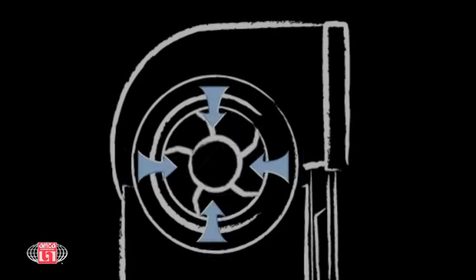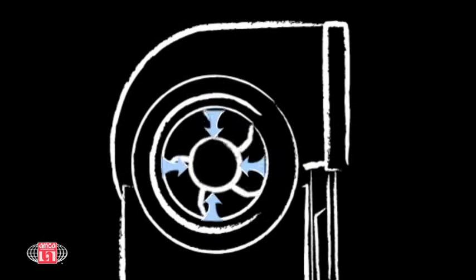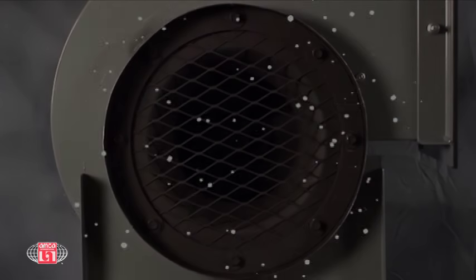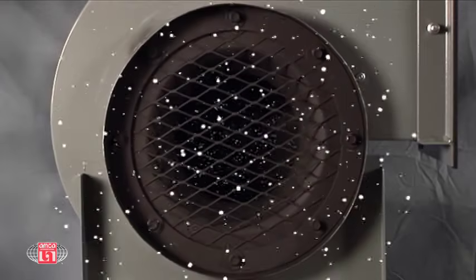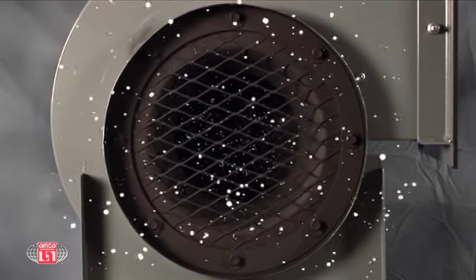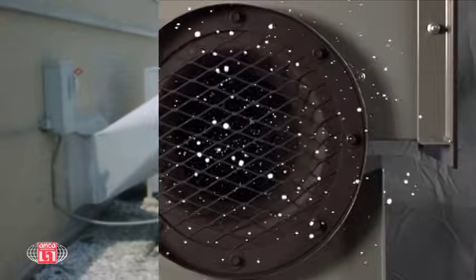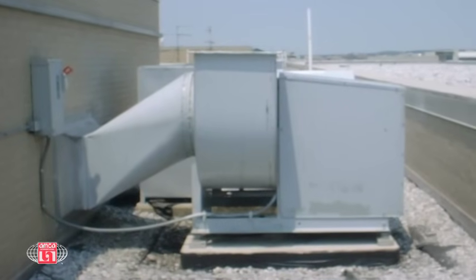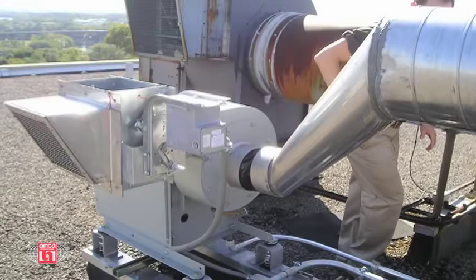System effect at the fan inlet and outlet seriously impacts air flow. The first major impact involves proper fan inlet design. As stated earlier, the air flow at the inlet must be fully developed, symmetrical, and free from swirl. Non-uniform inlet flow is the biggest cause of system loss. Factors adversely affecting inlet flow are insertion of obstructions, elbows and dampers too close to the fan inlet.